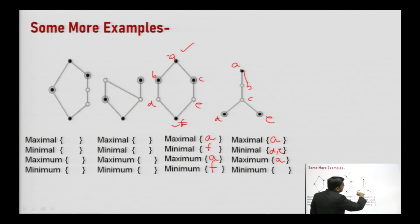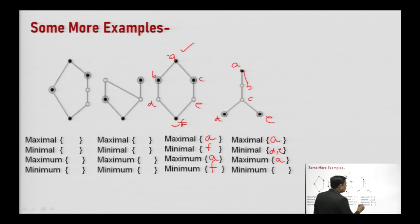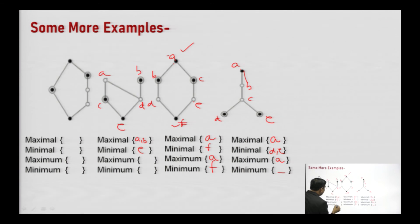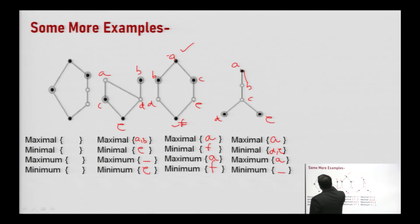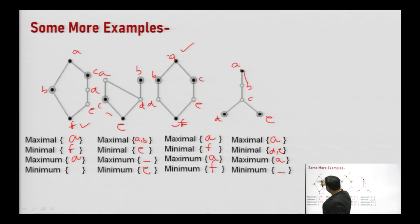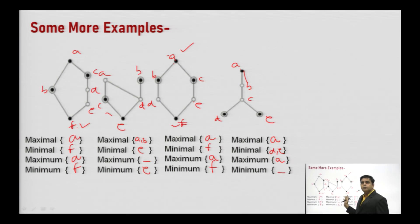If a diagram has a single top element A where all elements connect to it, then A is the maximum element. If F is the single bottom element connected to all others, then F is the minimum element. For a diagram with elements A, B, C, D, E, F: A is the maximum element (all elements relate up to A), and F is the minimum element (all elements relate down from F). So from this Hasse diagram, we can identify these special poset elements.